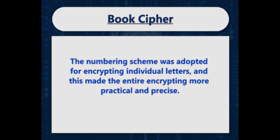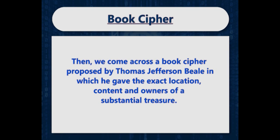In the eighteenth century, Christian Breithaupt modified this method by using numbers for the page and line where a particular alphabet occurs first, limiting the key to the first few pages of a book. Later, Philip Thicknesse wrote a similar method using a numeric code to refer to a word by page, line, and word number. Several modified versions of book ciphers were produced, and the numbering scheme was adopted for encrypting individual letters, making encryption more practical. This ultimately led to the formation of what is known as the only unbreakable cipher.